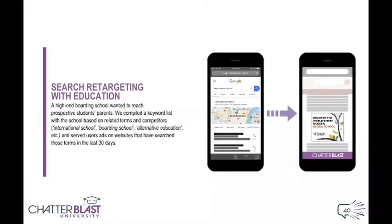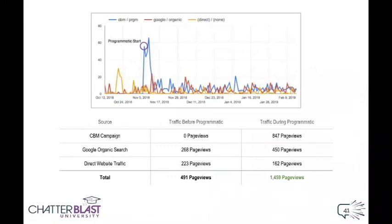Moving along to a programmatic mobile campaign case study: a high-end boarding school wanted to reach prospective students' parents. We pulled together a keyword list for search retargeting and served ads to people searching those terms for up to 30 days. At the end of the campaign, we were able to see a direct correlation between conversion actions and applications received by the school in the last 100 days. From the Google Analytics data we gathered when the campaign finally wrapped, not only could we see the impact of our ad campaign, but we were able to see a massive jump in organic search traffic. This client wasn't doing any other advertising or branding outside of our efforts, so the only attributable difference to the organic search traffic is the programmatic campaign.